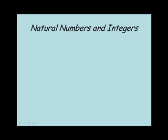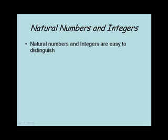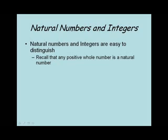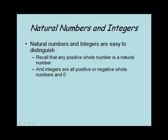Let's look at the natural numbers and the integers first. Natural numbers and integers are easy to distinguish. Remember, any positive whole number is a natural number, so when you see a positive whole number, you should recognize that as a natural number. The integers are all the positive or negative whole numbers and zero, so any positive, negative whole number or zero can be classified as an integer.